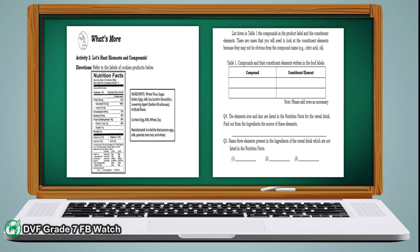Let's move on to 'What's More.' Kindly answer activity number 2, entitled 'Let's Hunt Elements and Compounds.' Refer to the given label of a cookies product and complete the table based on the nutrition facts and ingredients. Find out the compounds and their constituent elements. Then answer guide question number 4: the elements iron and zinc are listed in the nutrition facts for the cereal drink — find out from the ingredients the source of these elements. In number 5, name 3 elements present in the ingredients of the cereal drink which are not listed in the nutrition facts.